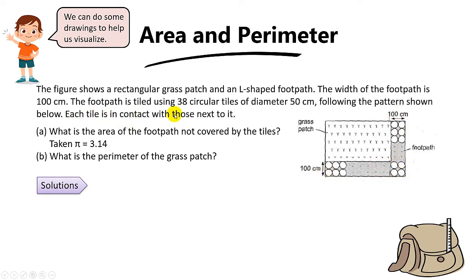For part A, we want to find the area of the footpath not covered by the tiles. In other words, we have to take the total footpath area minus the area of the 38 circular tiles. But can you find the area of the total footpath? Unfortunately we can't, because we do not know the length here or the length here. So what do we do?